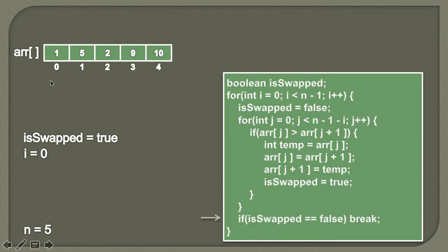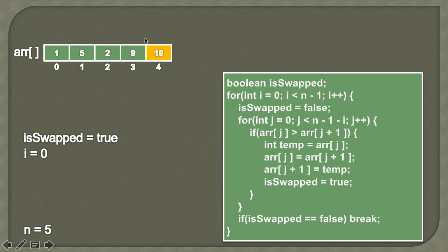After the inner for loop, we have completed one full iteration. We check whether any swap was performed. Since isSwapped is true, the if condition comes out to be false and we continue. After the first iteration of the outer for loop with i equal to zero, the largest element — 10 — has sunk to the end of the array and is now at its correct position.